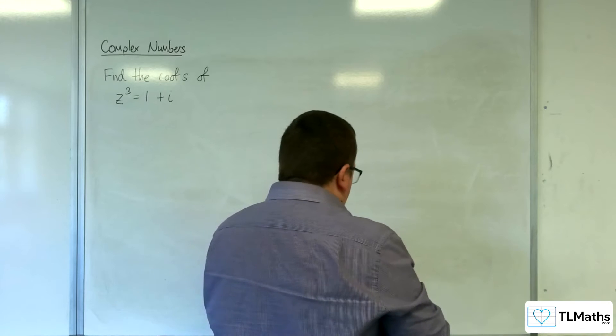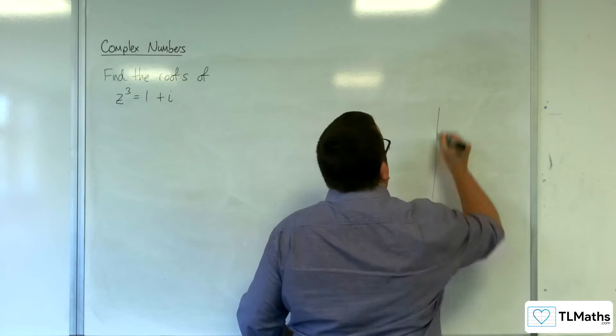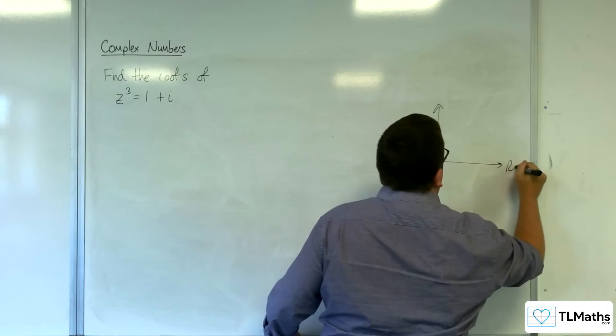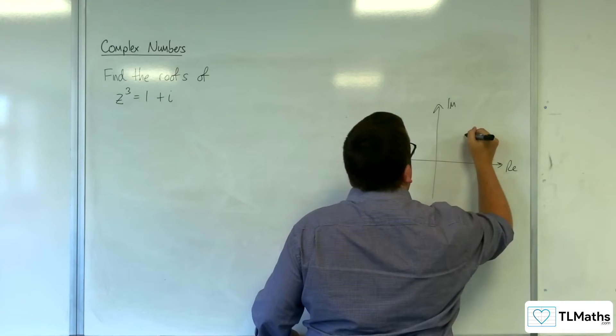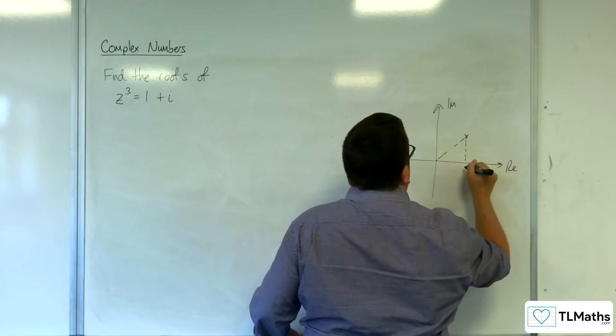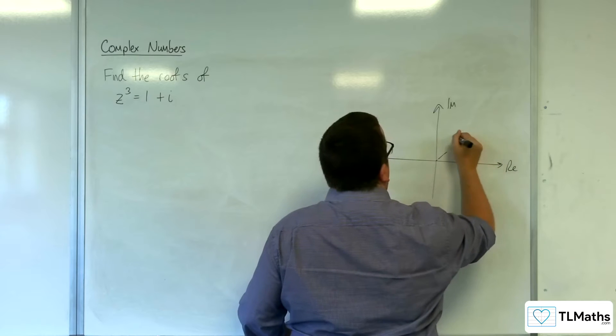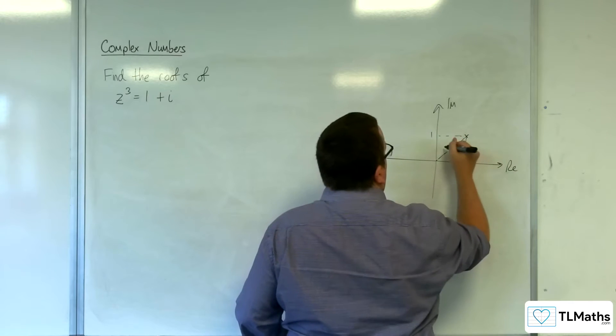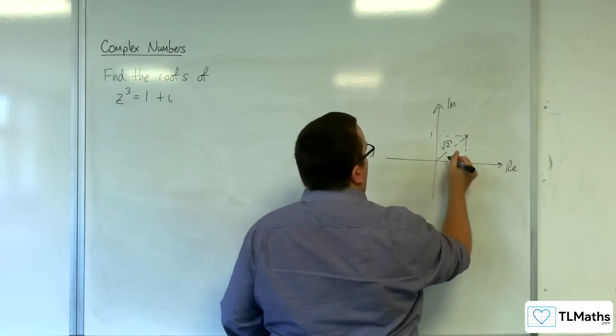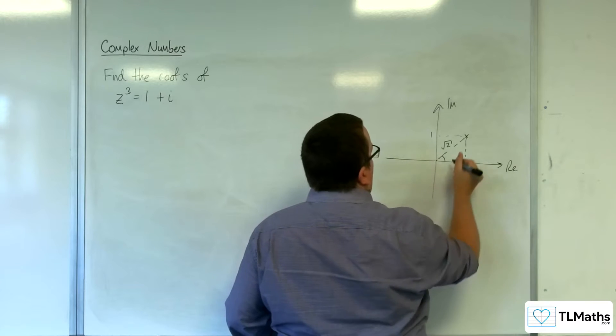So 1 plus i, real, imaginary, 1 plus i is going to be here. So 1 along and 1 up. So your length, your modulus is going to be root 2 and this angle is going to be pi over 4.